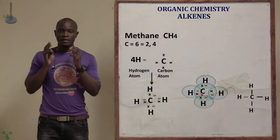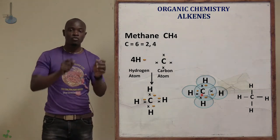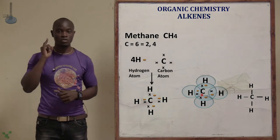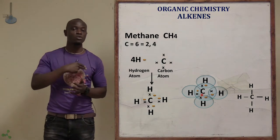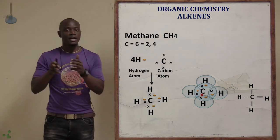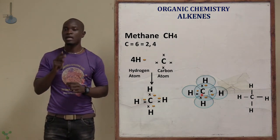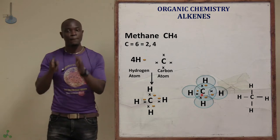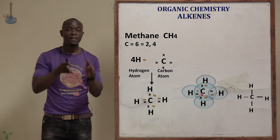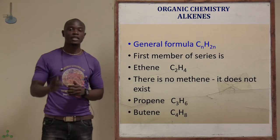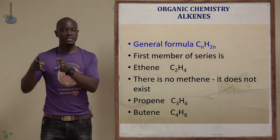In methane, carbon is bonded to four hydrogens. The valency of each hydrogen is only one, while the valency of carbon is four, meaning carbon can form two bonds. However, hydrogens can only accept one electron from carbon and not two. Therefore, it is impossible to have methene.